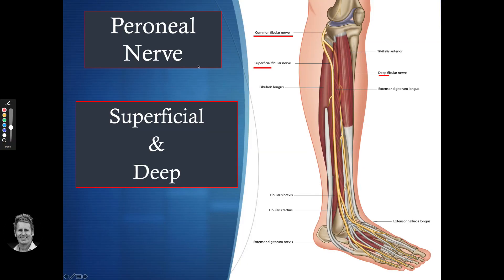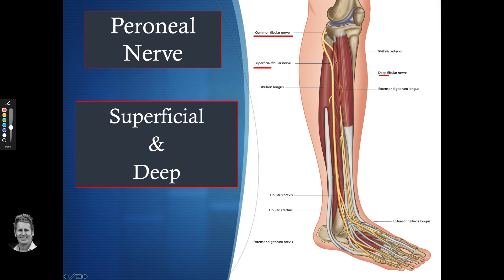The peroneal nerve, also known as the common fibular nerve, splits into the superficial fibular, which supplies fibularis longus and fibularis brevis, and the deep fibular (deep peroneal) nerve, which supplies tibialis anterior, extensor digitorum longus, and extensor hallucis longus. The fibularis tertius is actually a continuation of the extensor digitorum longus.